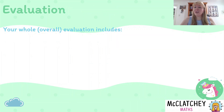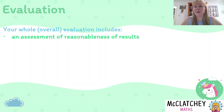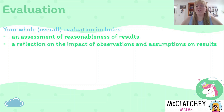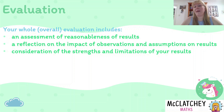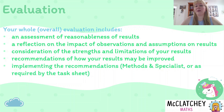So let's talk about what our evaluation needs to include — the whole evaluation, not just one descriptor. Firstly, we need an assessment of the reasonableness of results, which is what we're focusing on in this video. There's also a reflection on the impact of observations and assumptions — really important for the top mark. Then we consider strengths and limitations, make recommendations on how results might be improved, and in methods or specialist maths, we also implement those recommendations.